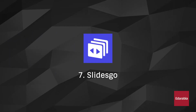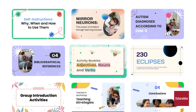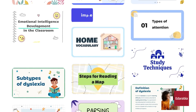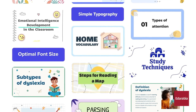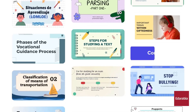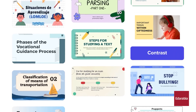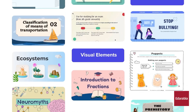Number 7: SlidesGo. SlidesGo is a game-changer in presentation creation, using AI to transform your content into visually captivating slides from a vast template library. It's an essential AI tool for students seeking efficiency and visually appealing presentations. Experience the power of SlidesGo and elevate your presentation game with ease and style.